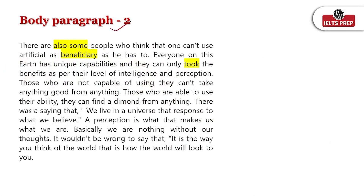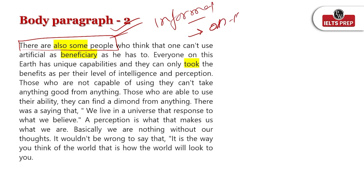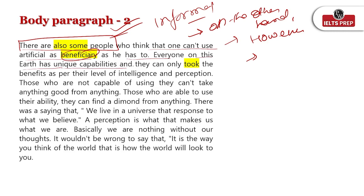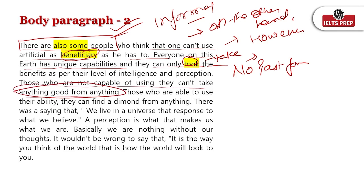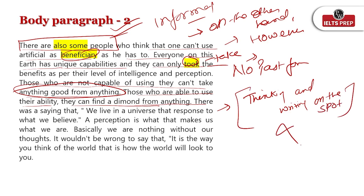Talking about body paragraph two, the student started with very informal language. Instead you can write 'on the other hand' or 'however' — there are other transitional words you could use. The student wrote 'everyone on this earth has unique capability' and struggled with sentence structure throughout, like 'those who are able to use their ability they can find a demand of anything.' This shows the student is thinking and writing on the spot, which is one of the biggest mistakes. Always plan before you write.